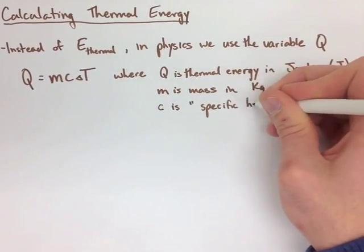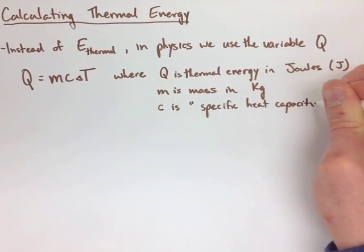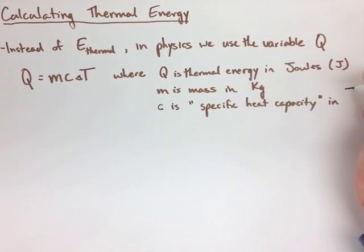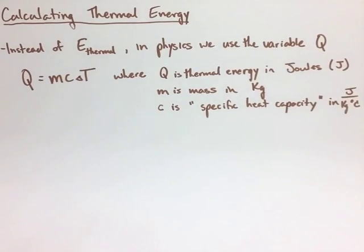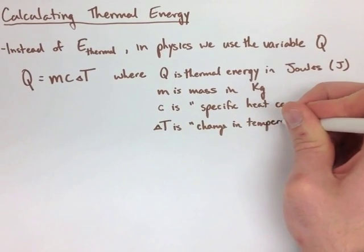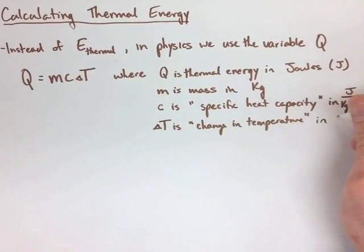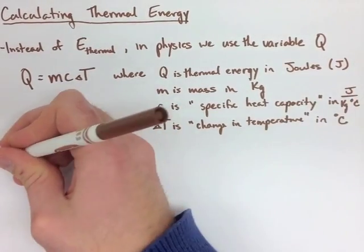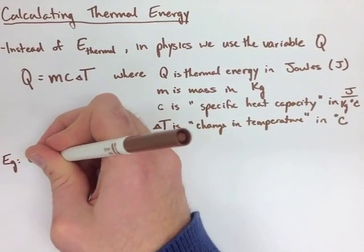But C is called specific heat capacity, and it's in joules per kilogram degrees Celsius. It's something that I will give you for each substance we talk about, or you'll have to calculate. But it's special for each substance, and each substance has its own specific heat capacity.